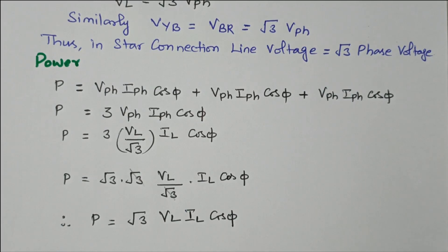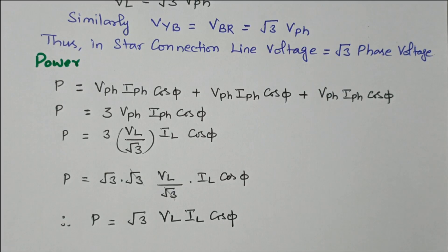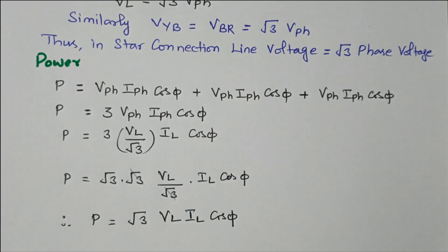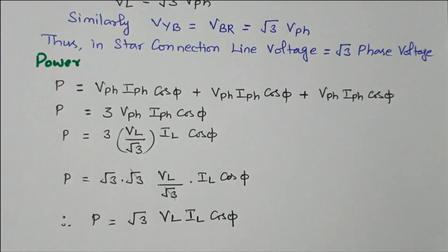In this video, we discussed the balanced star connection and its diagram. The key relations are: line current equals phase current, and from the phasor diagram using the parallelogram equation, line voltage equals √3 times phase voltage. From that, we calculated power as √3 · V_L · I_L · cos φ. Subscribe the channel for more videos and notifications. Soft copy of this material is available in the drive; the link is given in the description box. Thank you for listening.